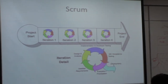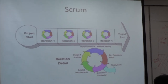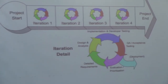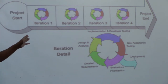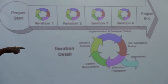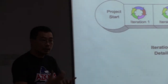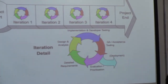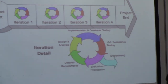The project starts and goes through iterations. A lot of dev groups changed iteration names from 1, 2, 3 to alpha, beta, charlie — some even named iterations after their girlfriend's names. Each iteration has implementation, developer testing, QA, deployment, evaluation, prioritization, requirement detailing, design, and analysis — that's the usual loop within each iteration until you finish the product.